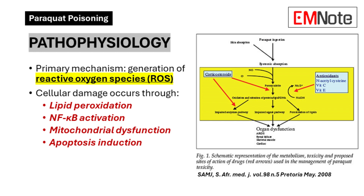Additional mechanisms include disruption of mitochondrial function, compromising cellular energetics, and initiation of programmed cell death pathways. The cumulative effect of these processes results in progressive tissue damage and organ dysfunction.